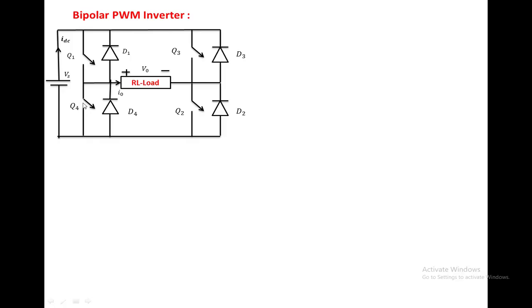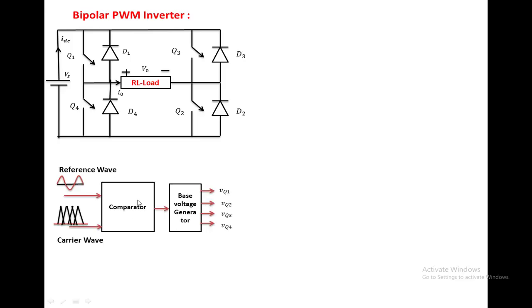The control switches Q1 to Q4 are on only when the base voltage is applied to the particular device. The base voltage is applied using a comparator or logic circuit. The inputs to this circuit are the reference wave and carrier wave. The reference wave is a sine wave and the carrier wave is a triangular wave. A comparison is done between these two signals, and whenever the reference wave is greater than the carrier wave, it activates the base voltage generator for the respective devices.